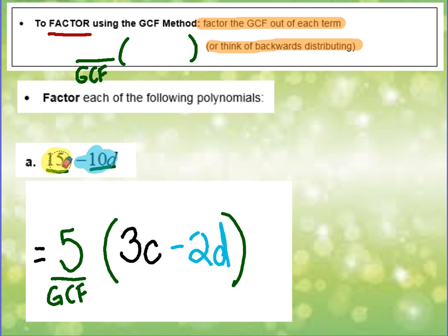So these two expressions are equivalent. Here's the binomial, and here it is in factored form. If we were to distribute, we should always get our polynomial back.